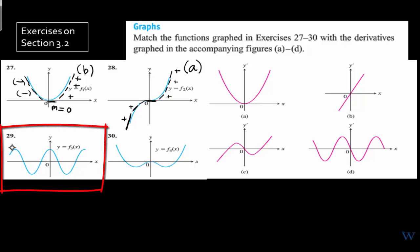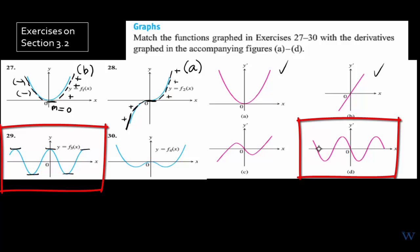In number 29, let's look at where zero slopes occur in the curve. Those zero slopes correspond to the x-intercepts of the derivative function. How many are there? Five. So most likely letter D, which has five zeros, matches number 29.